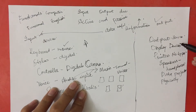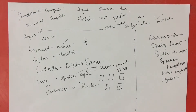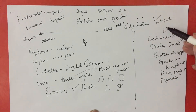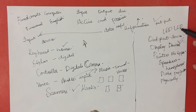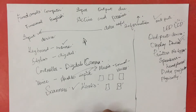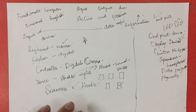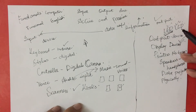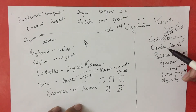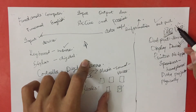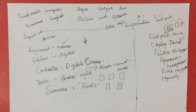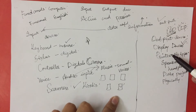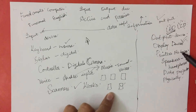First let's discuss display devices. All monitors and screens which display information are called display devices. We have LED and LCD screens — LCD stands for Liquid Crystal Display, and LED stands for Light Emitting Diode. So we have two types of screens, and all monitors and screens come under display devices.